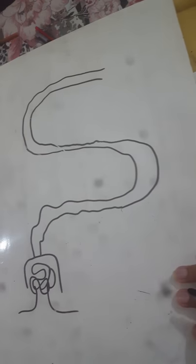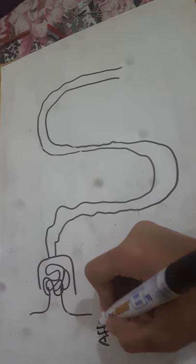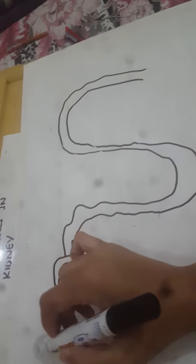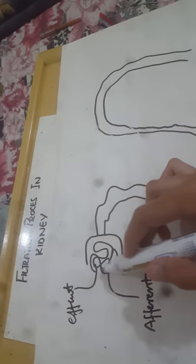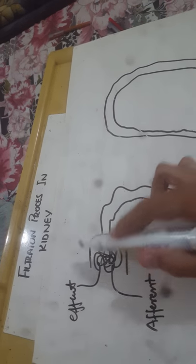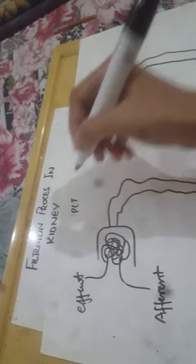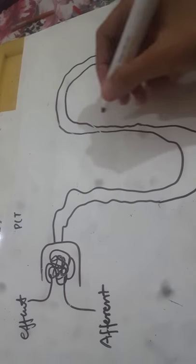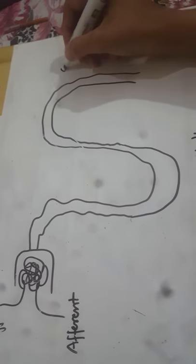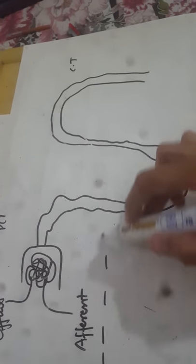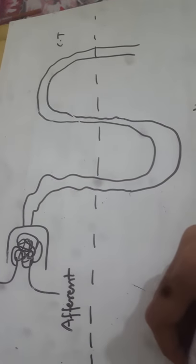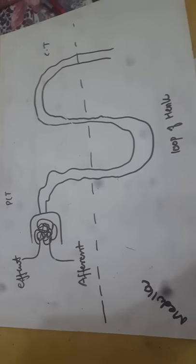This is a picture of a nephron. The afferent arteriole brings blood to the kidney, and this is the efferent arteriole. This is the glomerulus, this is Bowman's capsule, this is the proximal convoluted tubule, this is the descending loop of Henle, this is the ascending loop of Henle, and this is the collecting duct. This is the medulla — this is the overall structure of the kidney.